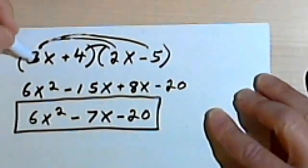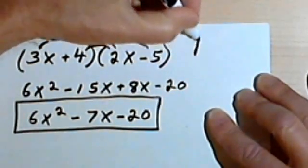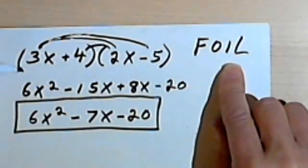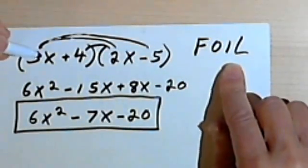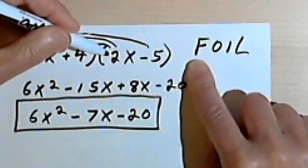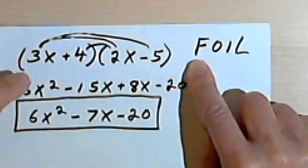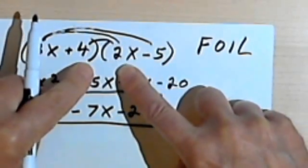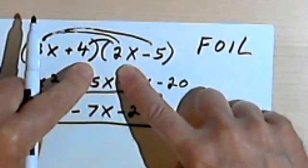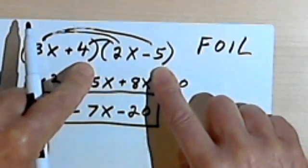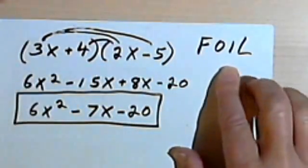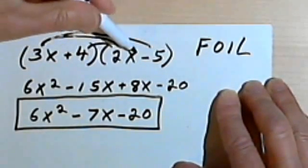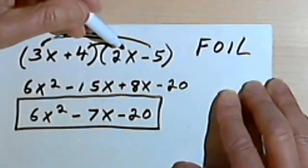Sometimes this process is called foiling. FOIL is an abbreviation — we're taking the First term times the first term, that's the F; then the Outside terms, that's the O; then the two Inside terms, that's the I; and then the two Last terms, that's the L. So if the idea of foiling helps you remember the order in which you do these, that's fine.